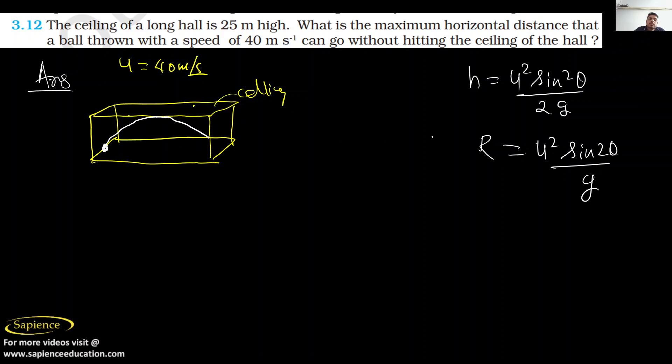If you use the formula R equals u squared sine 2θ divided by g, and put θ equals 45 degrees, you will get maximum range. But the thing is, by using this formula it may happen that the ball may strike the ceiling. So we need to find angle θ so that it won't strike.